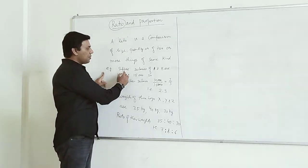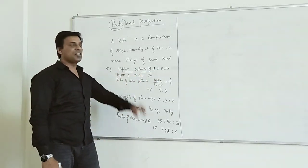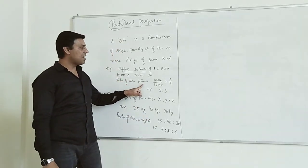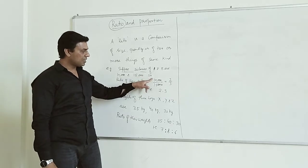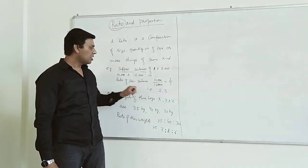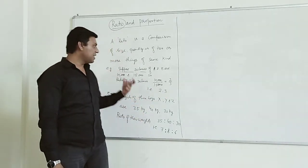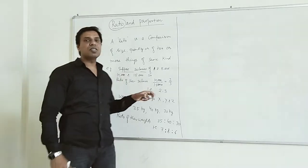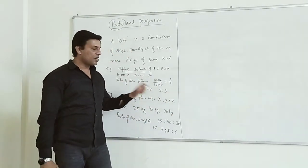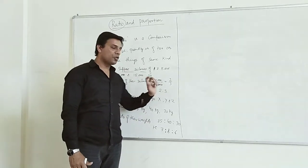For example, suppose salary of A and B are 10,000 and 15,000 respectively. So the ratio of their salaries is 10,000 upon 15,000. We will simplify to 2 upon 3. So the ratio of their salaries is 2 ratio 3.